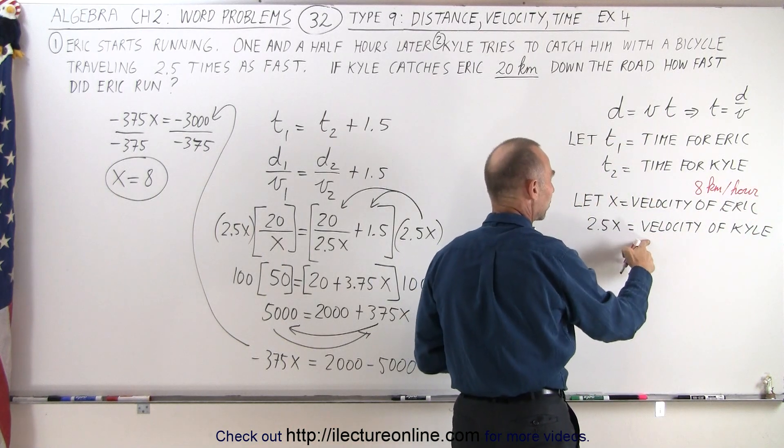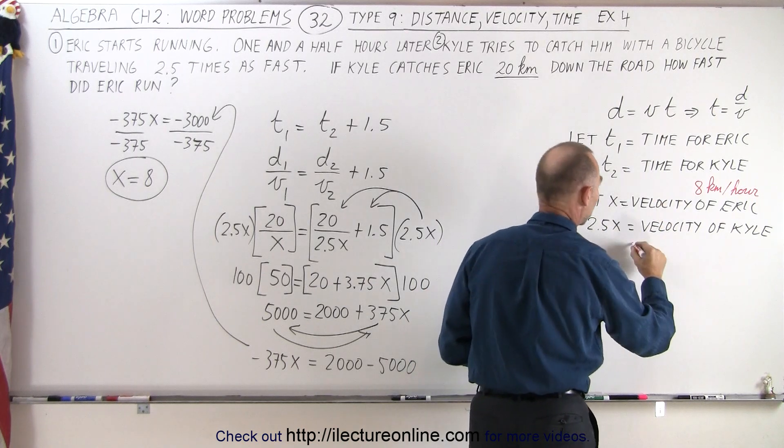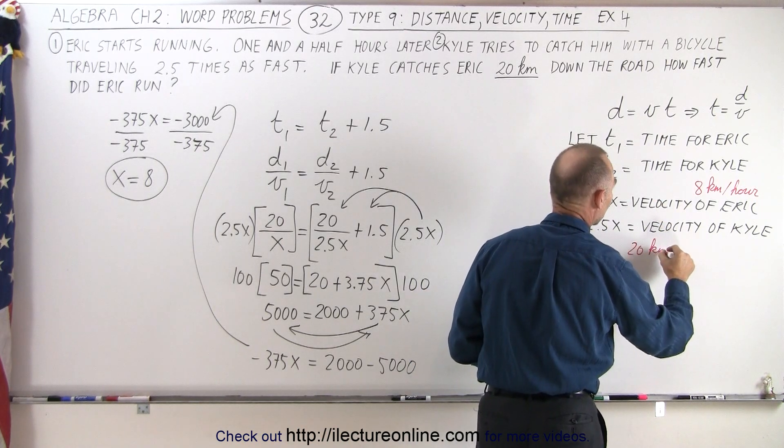And Kyle and his bicycle will travel two and a half times as fast. Two and a half times 8 will be 20 kilometers per hour.